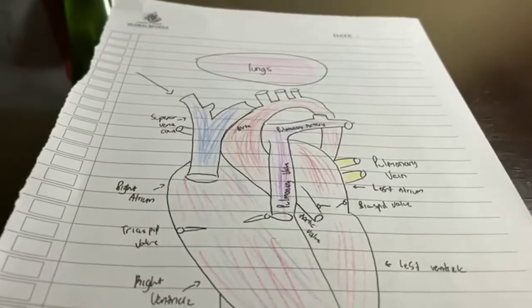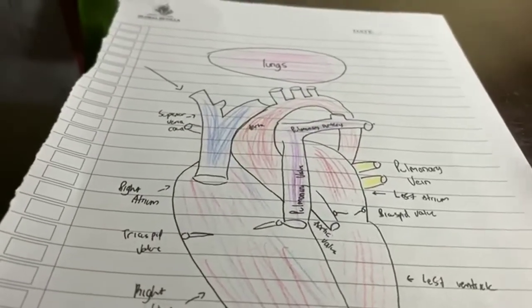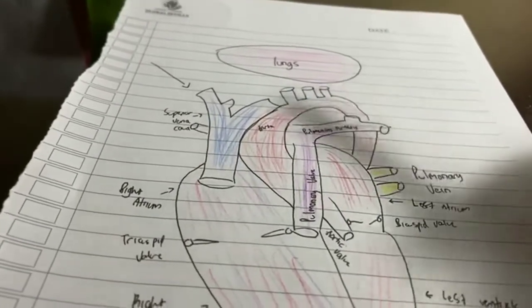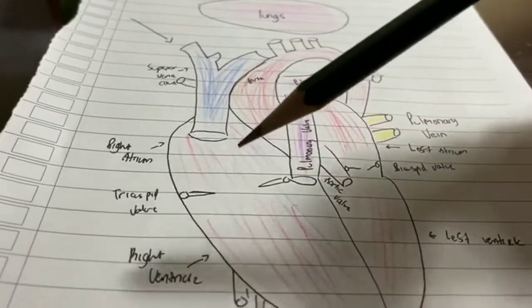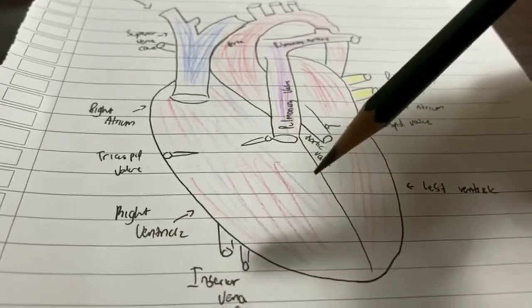Next, we have the movement of the blood. First, blood comes to the superior vena cava as deoxygenated blood. After that, it goes into the right atrium, through the tricuspid valve, into the right ventricle.